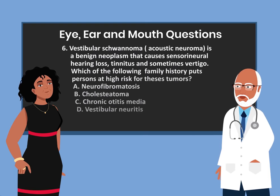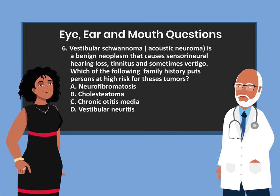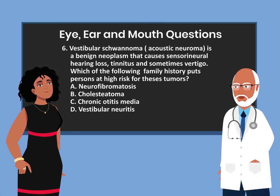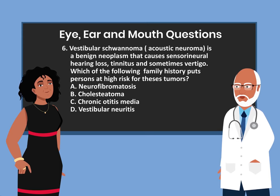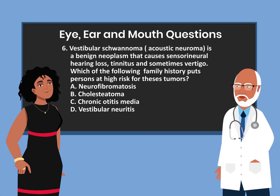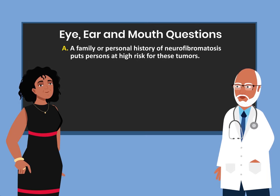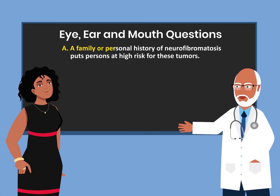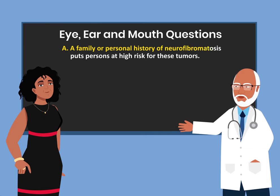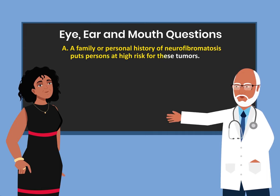Question 6. Vestibular schwannoma, which is also known as acoustic neuroma, is a benign neoplasm that causes sensorineural hearing loss, tinnitus, and sometimes vertigo. Which of the following family history puts persons at high risk for these tumors? A. Neurofibromatosis. B. Cholesteatoma. C. Chronic otitis media. D. Vestibular neuritis. The answer is A. A family history or personal history of neurofibromatosis 2 puts persons at high risk for these tumors.